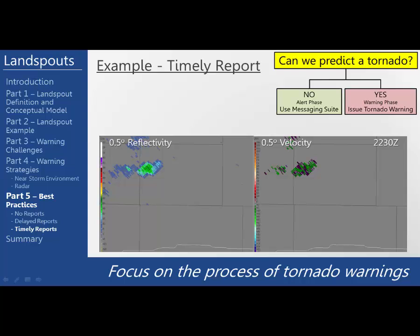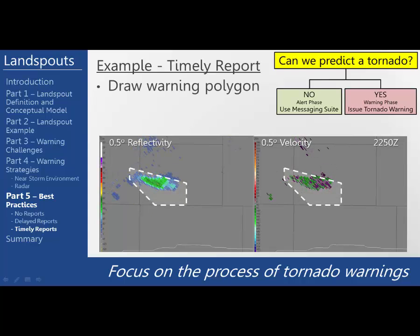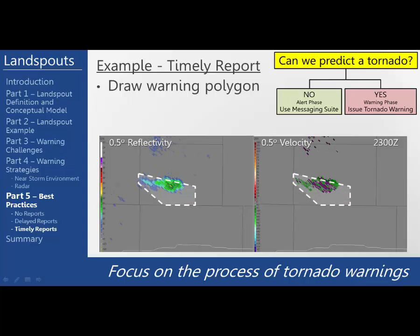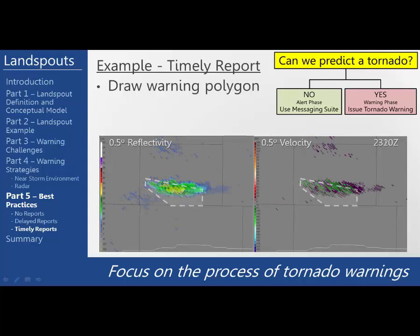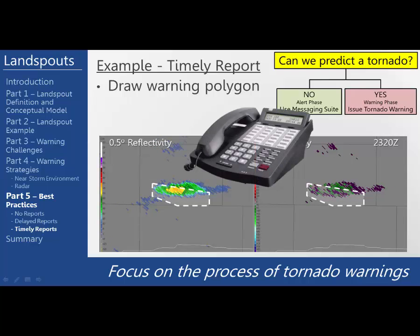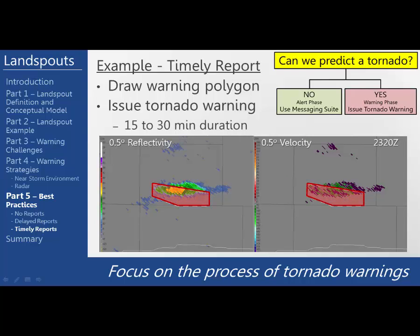This last scenario deals with a very timely report. Using the same reasoning as the previous three scenarios, we recognize the threat and message it with one or a combination of alert communication options to inform people of the potential for landspout tornadoes. We are still drawing up a tentative tornado warning polygon. At 2320, the phone rings and it's a county dispatch center saying a deputy is watching a funnel cloud. He's not sure if it's reaching the ground and he can't see debris because some trees are in the way. He says it looks like it's lowering. In this case, there is temporal and spatial continuity to issue a tornado warning. Since the polygon is already drawn up, you should be able to get the tornado warning out in a few seconds after receiving the information from the dispatch center.